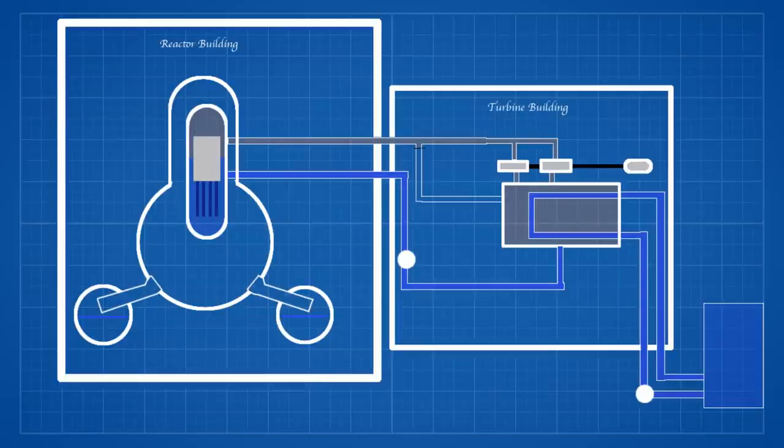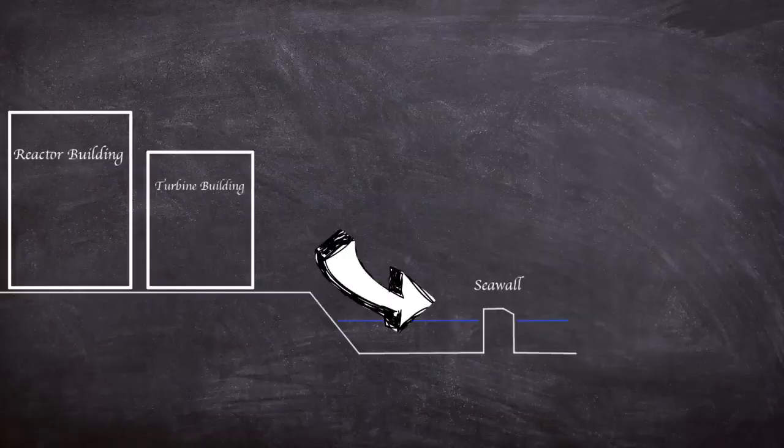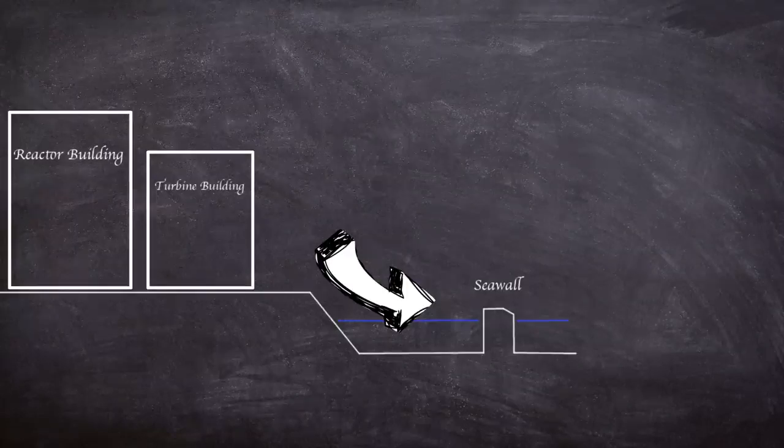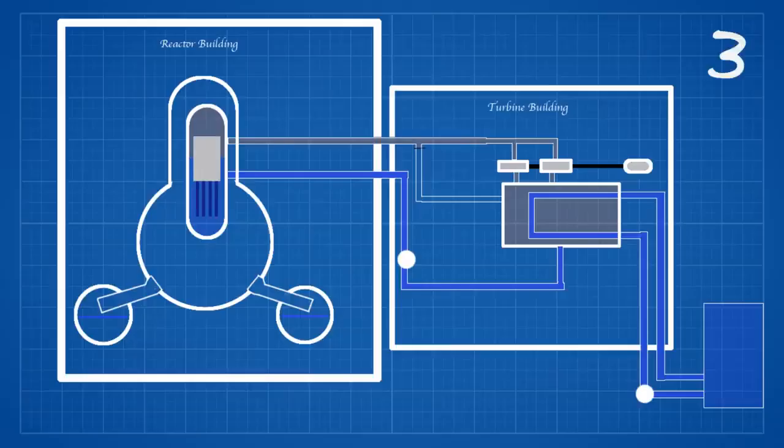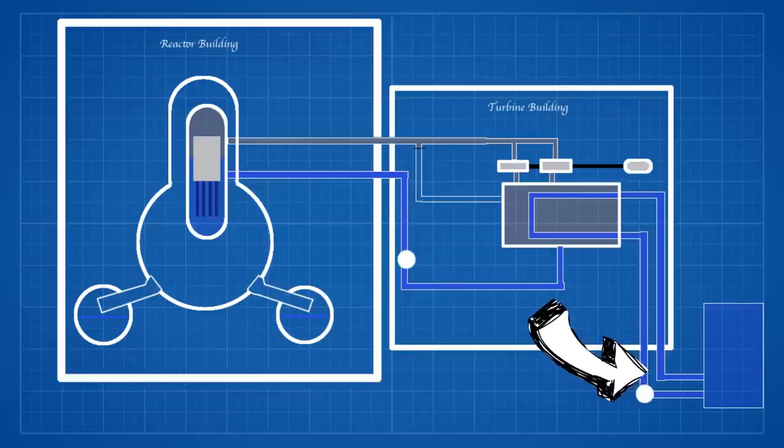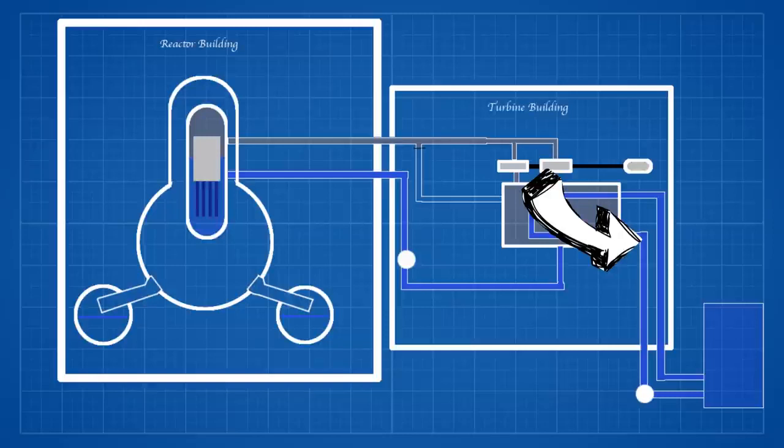At Fukushima seawater was used for condenser cooling water and auxiliary equipment cooling water. A seawall 10 meters high from the seabed was built in front of the power station with open channels behind it that led from the power plant to the ocean. Water was drawn in through sluice gates and pump rooms installed for each unit. From there it is transferred to the condenser by pumps installed in the pump rooms.